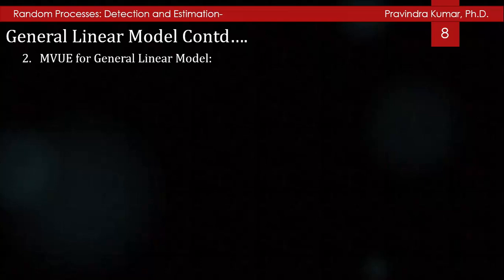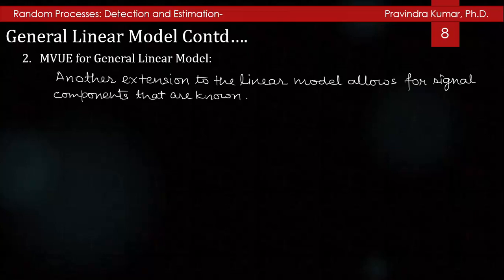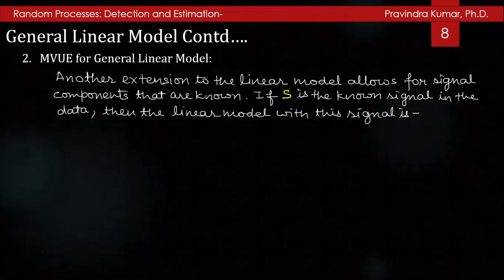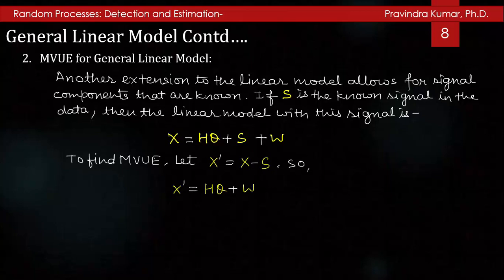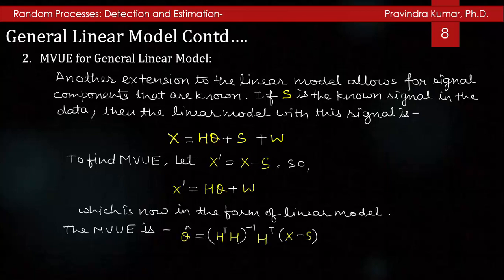Another extension to the linear model allows for signal components that are known. If S is the known signal in the data, then the linear model with this signal is x equals H theta plus S plus omega. To find the MVUE, let x dash equal x minus S. Then x dash equals H theta plus omega, which is in the standard linear model form. The MVUE estimator is theta cap equals inverse of (H transpose H) times H transpose times (x minus s), and the covariance matrix of theta cap is C theta cap equals sigma squared times inverse of (H transpose H).